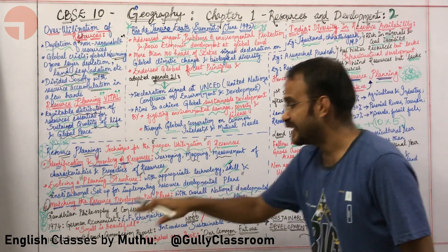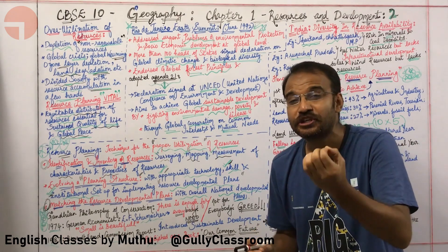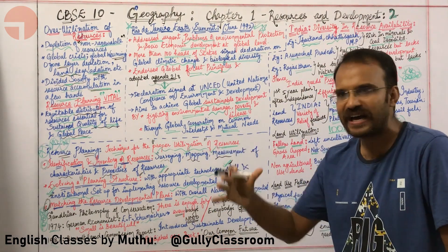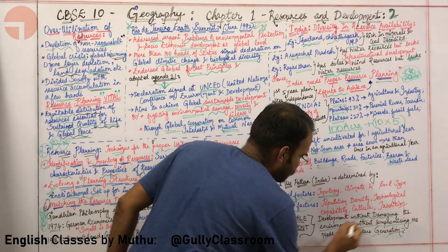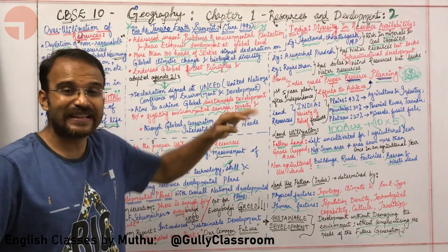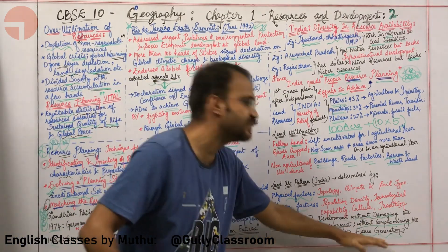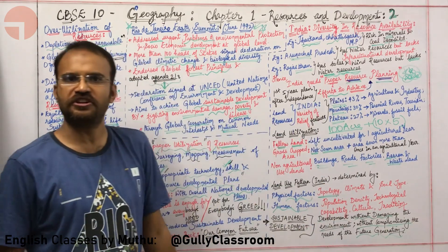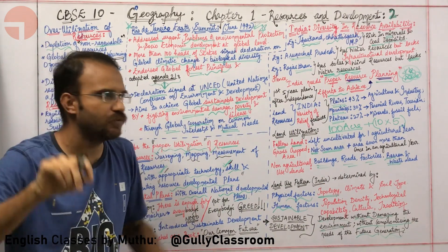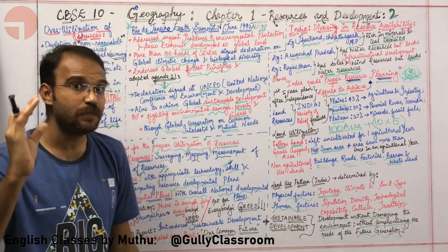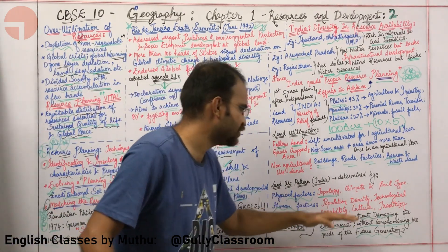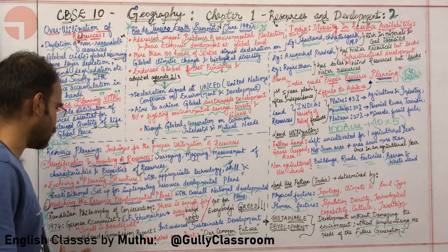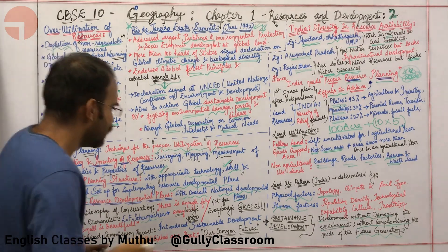In the year 1987, the Brundtland Commission report was released, which introduced the term sustainable development. Sustainable development is development done without damaging the environment and without compromising the needs of the future generation — you should not use resources that must be preserved for the next generation. This Brundtland Commission report was later released as a book titled Our Common Future.